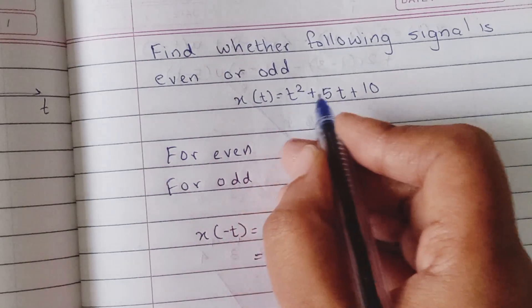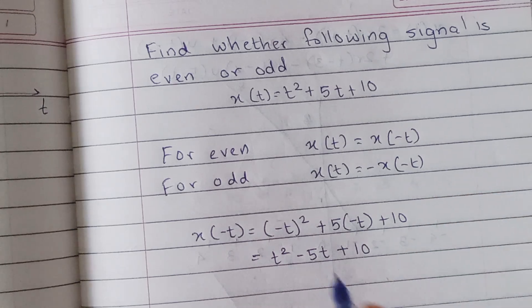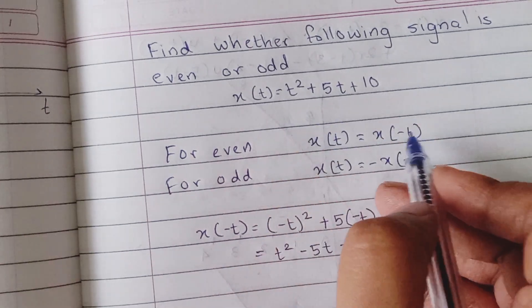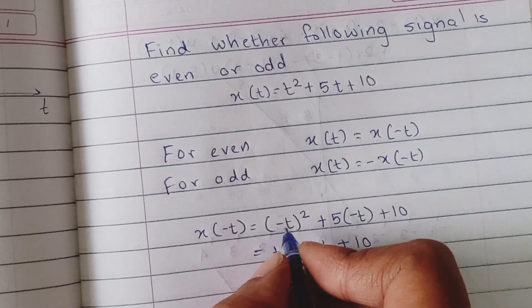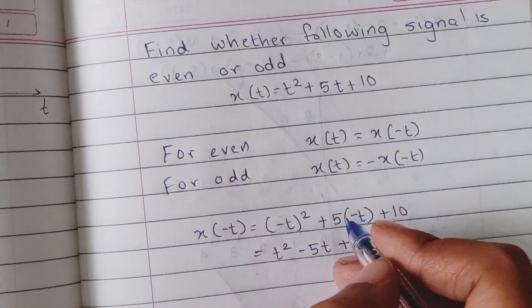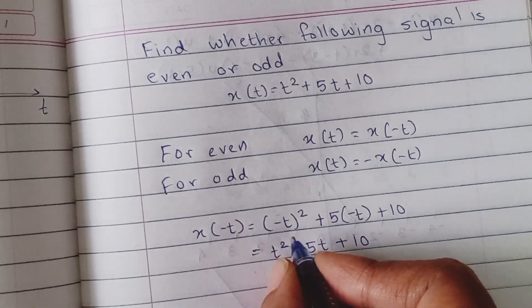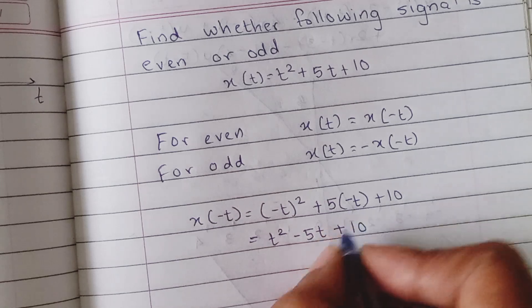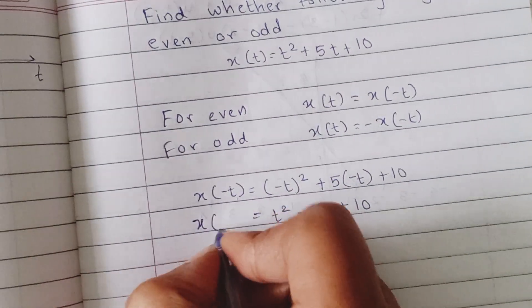So what do we have? It's t² + 5t + 10. We don't need to draw the signal to find it out. So what we can do is we can just replace t by -t to get what is x(-t) in our case. So if you replace t by -t, it's going to be (-t)² + 5(-t) + 10. Now -t times -t is going to plus t, so it's going to be t². 5 into -t is -5t + 10. This is what we have as x(-t).